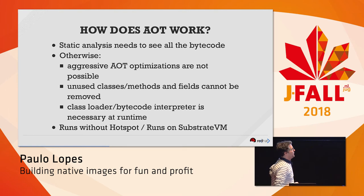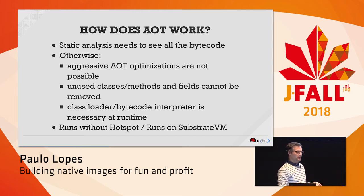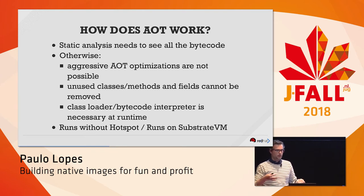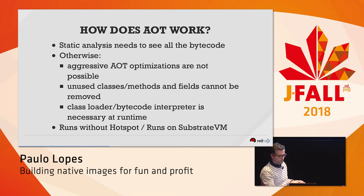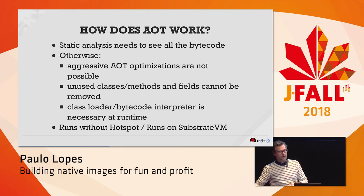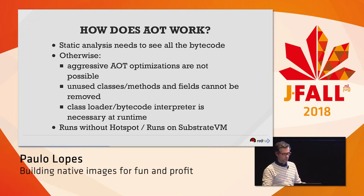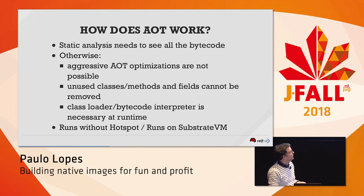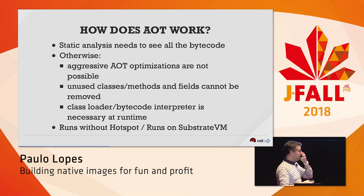Let's talk about what happens behind the scenes when working with native images. Native images are built with an ahead-of-time compiler. This compiler starts loading your bytecode from your public static void main entry point, and from there creates a graph of all the dependencies — classes and methods — that your application needs. From that list, it checks if all code is reachable. If it's reachable, it starts translating the bytecode into native assembly.